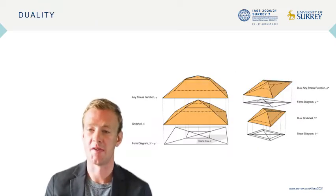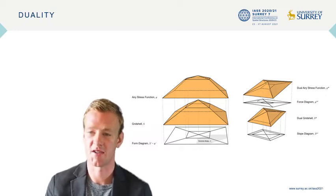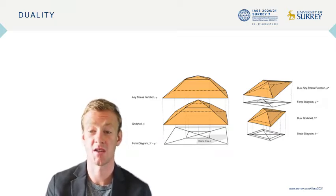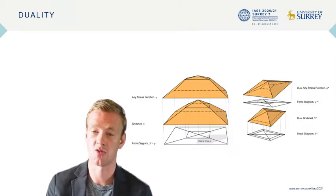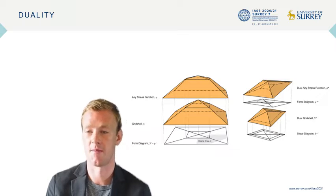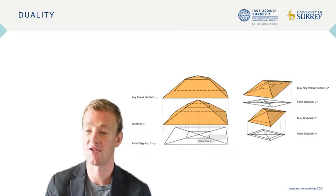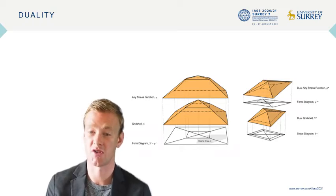A key feature of this paper is the duality displayed in graphic statics. A form diagram is lifted to form an airy stress function. The polar reciprocal of this polyhedron is constructed and then projected onto the horizontal plane to give the force diagram. The length of lines in the force diagram are proportional to the force in the reciprocal bars of the form diagram. The area of the polygons in the force diagram are proportional to the isotropic angular deficit of the airy stress function for the reciprocal node.